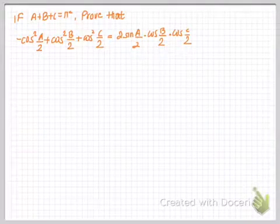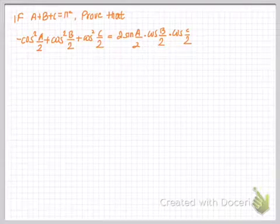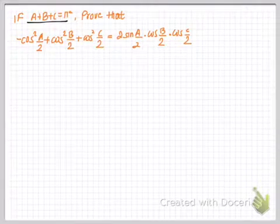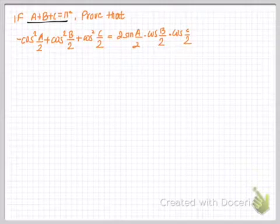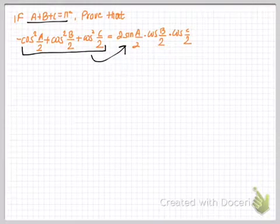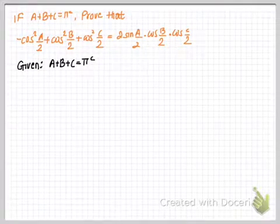Hello and welcome back. Today in this tutorial we will be looking at another question based on conditional trigonometric identity. We are given a condition that the sum of three angles A, B, C is equal to pi radians, and what we have to show is that the left hand side of our equation equals the right hand side. For proving this we have to start from our given condition.